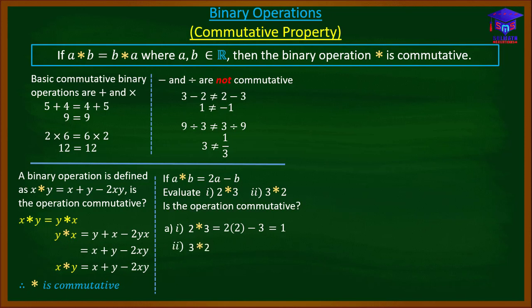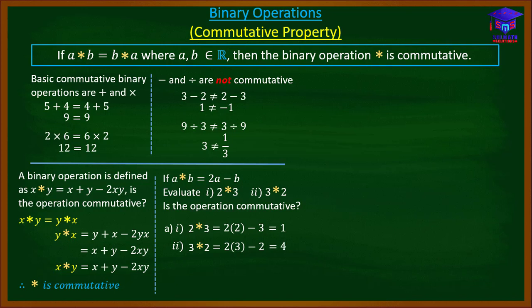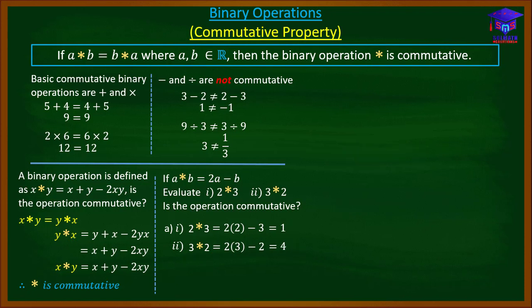For part (ii), 3★2: a is three and b is two, so substituting gives us four. Now, is the operation commutative? For the operation to be commutative, 2★3 must equal 3★2. But 2★3 gave one and 3★2 gave four — these are not equal. Therefore the operation star is not commutative.